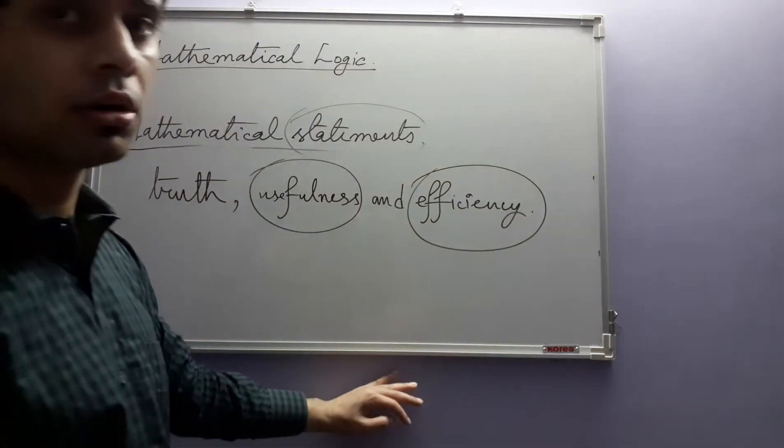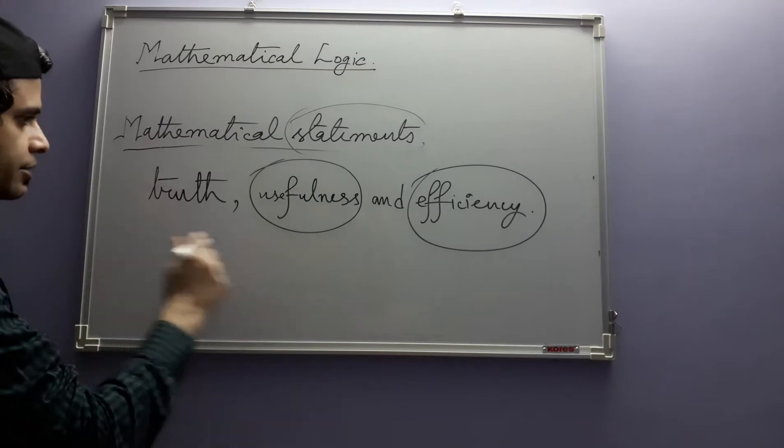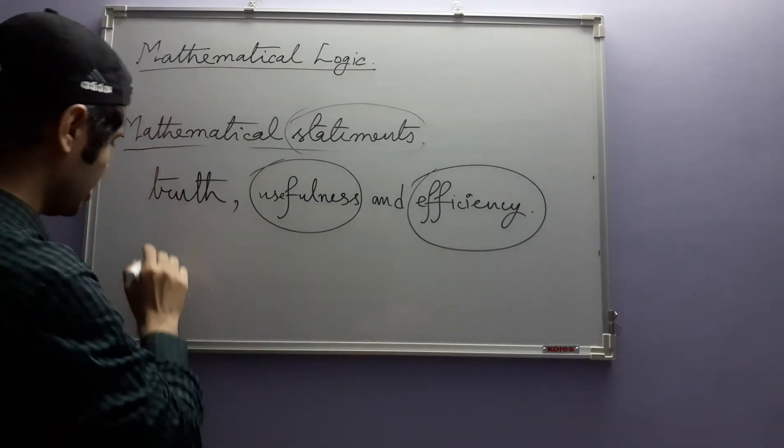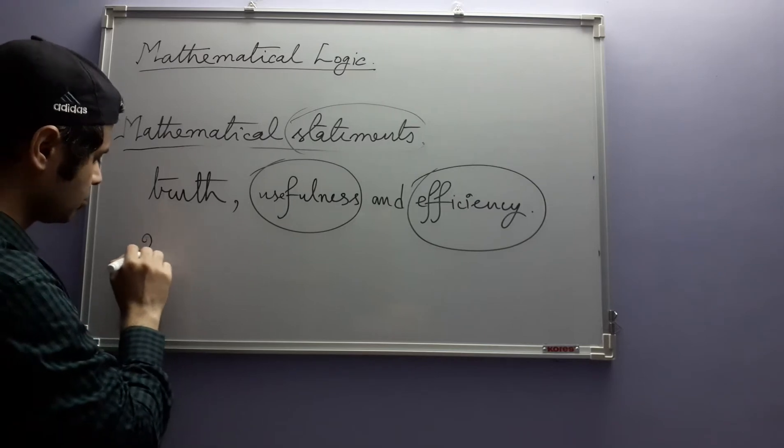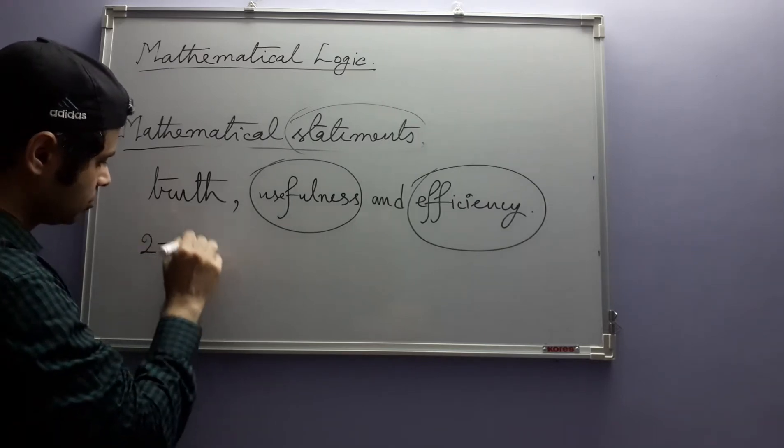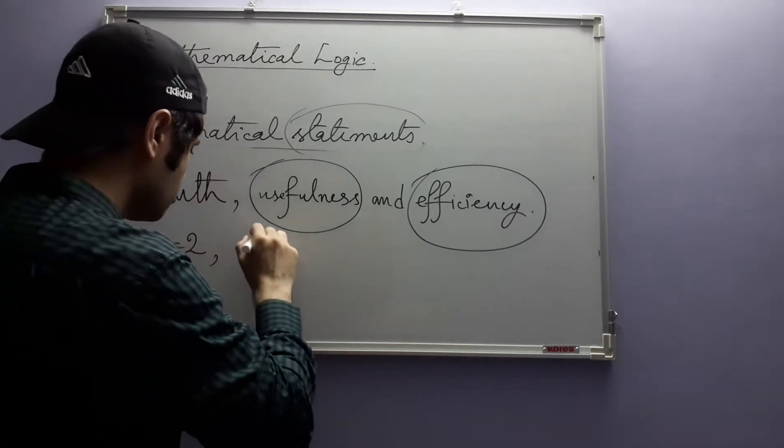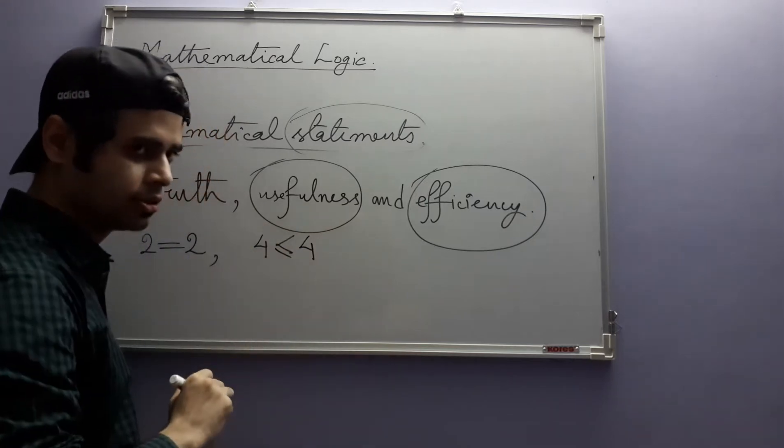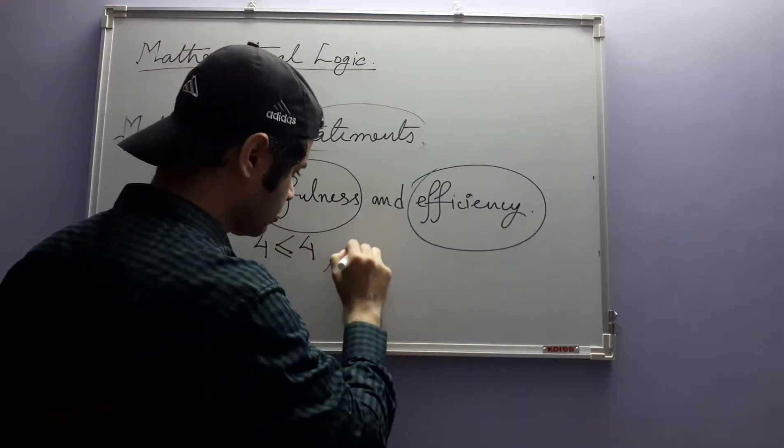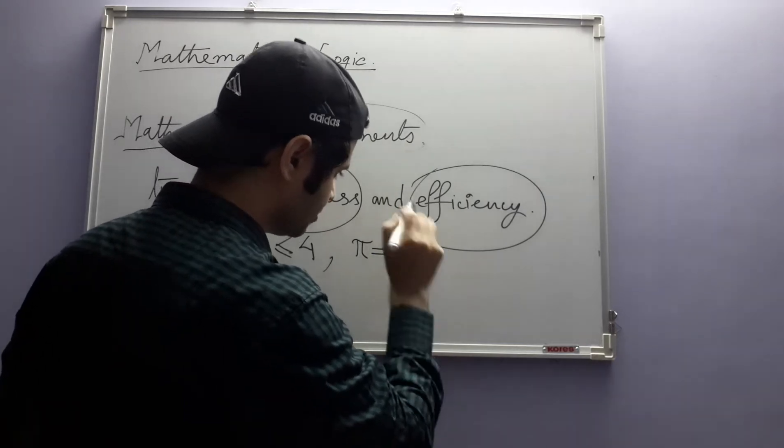Now, let us write down some mathematical statements and then we will see. 2 is equal to 2. 4 is less than or equal to 4. π is equal to 22 divided by 7.